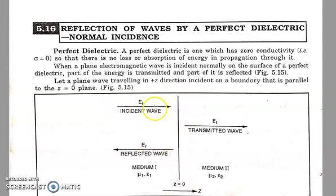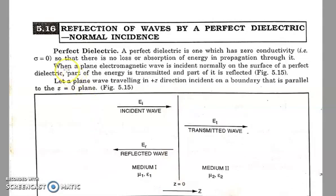The energy that is incident on this perfect dielectric — some energy is reflected back, whereas some energy is transmitted to the other side of the medium, but no energy is lost within the medium. That is, when a plane electromagnetic wave is incident normally on the surface of a perfect dielectric, part of the energy is transmitted and part of it is reflected.